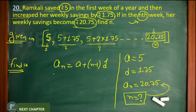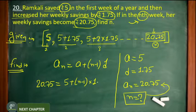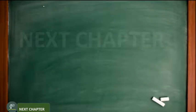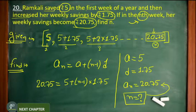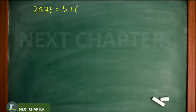First put the value of an, which is 20.75. The value of a is 5 plus n minus 1 as it is. And common difference is 1.75. You just have to find the value of n. So you write here, 20.75 equals 5 plus n minus 1 into 1.75.